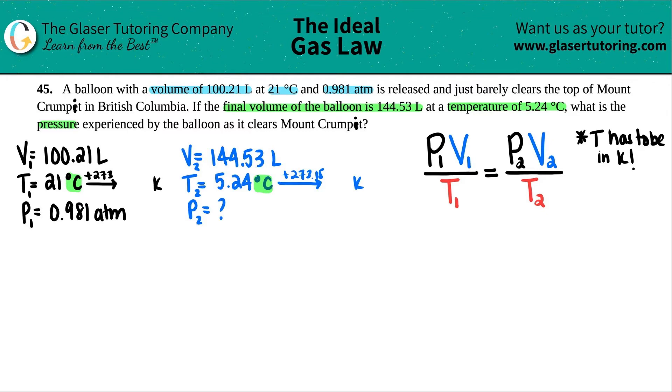But before we do that, there's only one rule for the combined gas law - temperature has to be in Kelvin. The other units, pressure and volume, could be in any unit, just as long as they are the same on both sides. But the temperature has to be in Kelvin. They gave us both Celsius. So for both of these numbers, I have to convert to some Kelvin number on both sides.